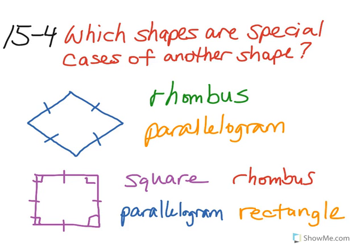This square can also be considered a rhombus since it has all equal sides and two pairs of parallel sides, a parallelogram since it has two pairs of parallel sides, as well as a rectangle since it has all right angles and opposite sides of the same length.